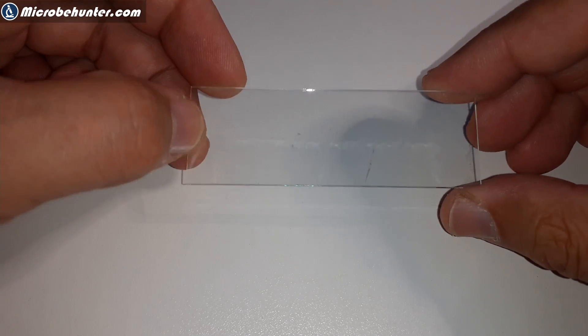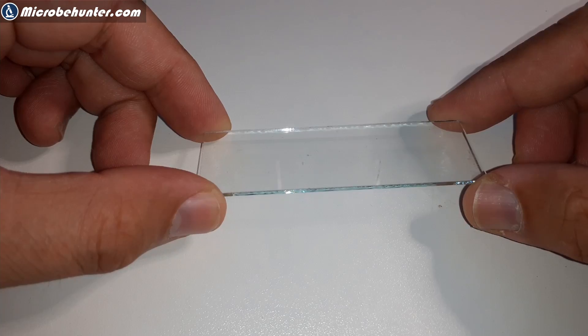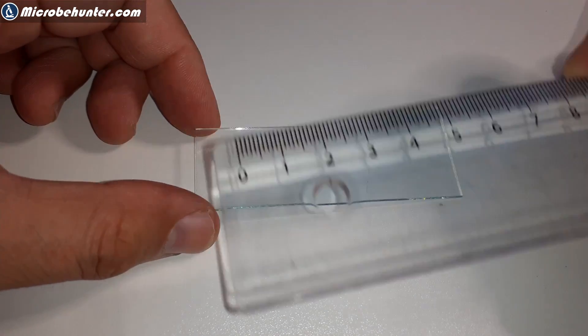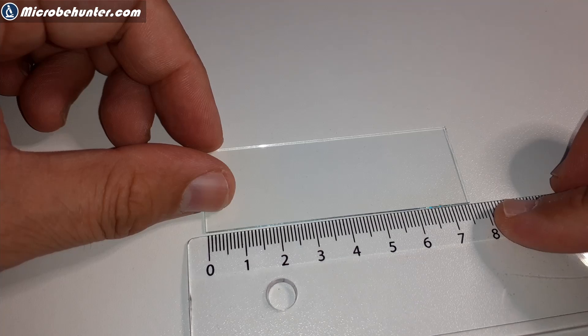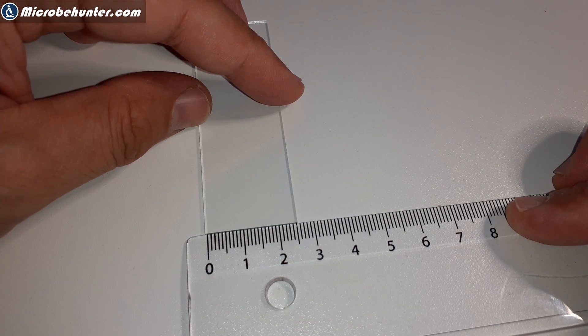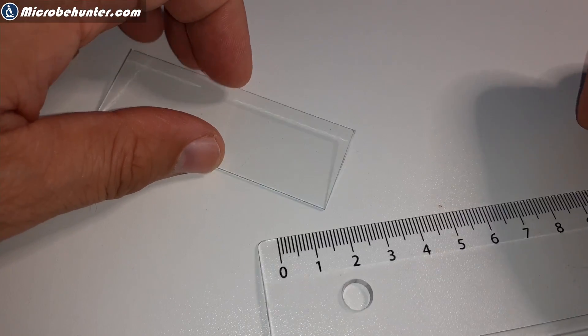This here is a standard microscope slide, actually one of the cheaper slides I'm using. I'm going to show you some higher quality slides as well. The size of a microscope slide is approximately 75 millimeters, which is three inches, by about 25 millimeters, which is one inch. Pretty much all microscope slides have this size.